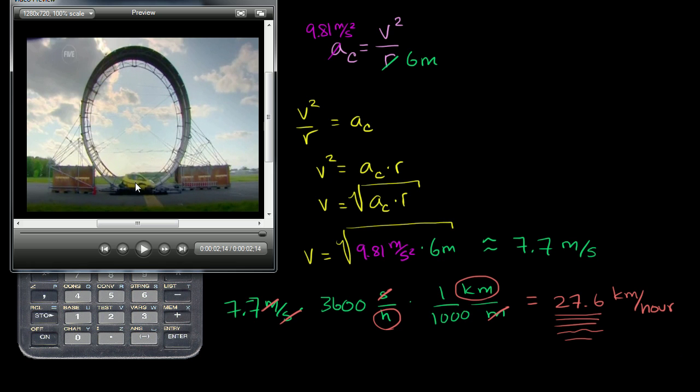And then we can use that and what we know about the circumference of this loop-de-loop. We're going to assume that it is perfectly circular for our assumptions, although it looks like it's a little bit egg-shaped in reality or a little bit elliptical. But for our calculations, we're going to assume that it is perfectly circular. I'll leave it to you to think about how it would change if you had an elliptical shape like this.